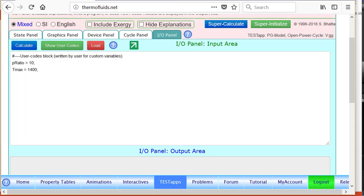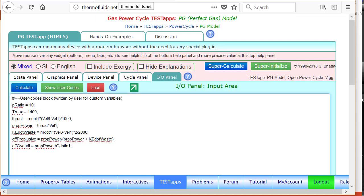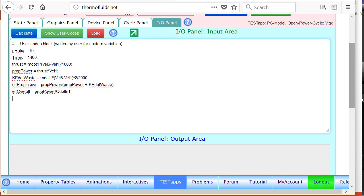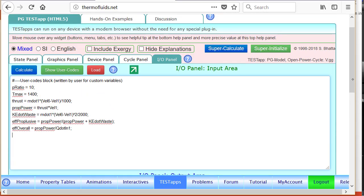In the I/O panel we can now calculate the thrust, etc., which I have done on another window to reduce time. So the thrust is given by m dot one, v6 minus v1, by thousand. And as you can see, similarly propulsive power, wasted kinetic energy, propulsive efficiency, and overall efficiency are all defined here. And if we do a calculate...